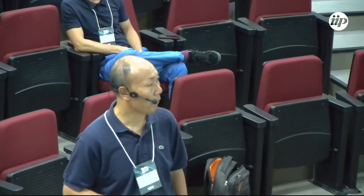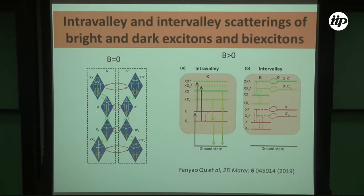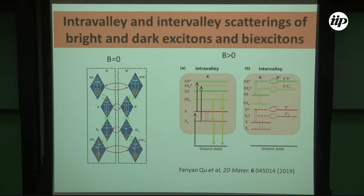In our system, we have bright excitons, dark excitons, and three different kinds of bi-excitons: the intra-valley bright-bright bi-exciton, the intra-valley bright-dark bi-exciton, and another configuration I didn't show here. With this kind of system you have many scattering channels — intra-valley scatterings inside the K valley and inside the K-prime valley, as well as inter-valley scatterings. You have to consider all of these scatterings to correctly compute the photoluminescence or valley polarization behavior.